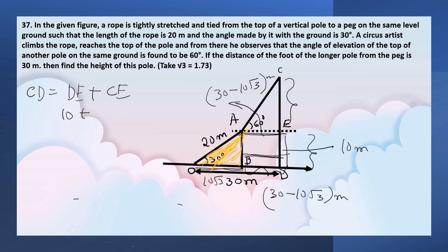Now we can calculate CE by using the tan ratio in triangle AEC. In triangle AEC, tan 60° equals the opposite side CE over the adjacent side, 30 minus 10√3.